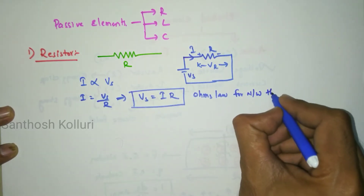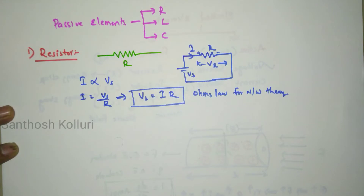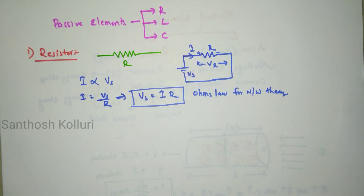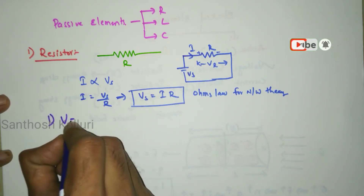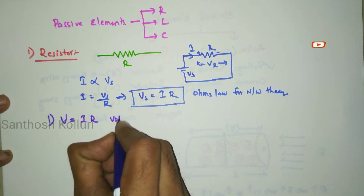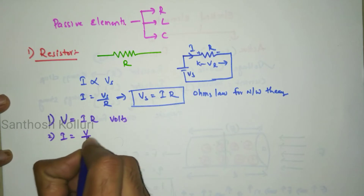So J equal to sigma E is Ohm's law for field theory, and V equal to IR is Ohm's law for network theory. Voltage across any passive element is directly proportional to the current flowing through the element. The two key formulas for a resistor are: voltage V is equal to IR volts, and current I is equal to V by R amperes.